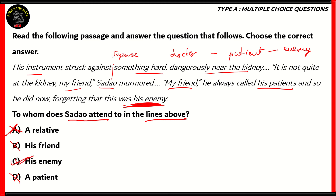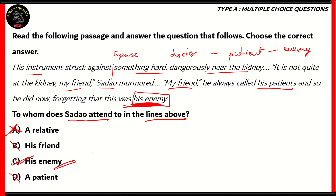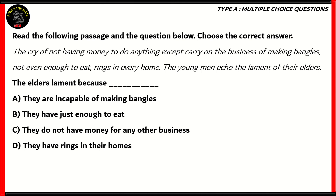The right option is option C — his enemy. If you look at the last part, it says 'and so he did now forgetting that this was his enemy.' It's clearly written down in the extract that the person Sadao is attending to in this particular situation is an enemy of his.